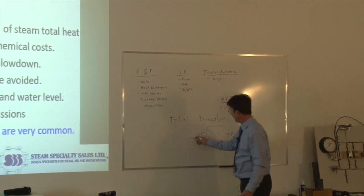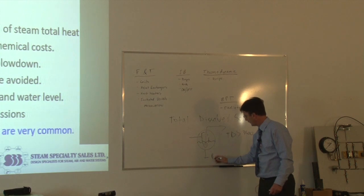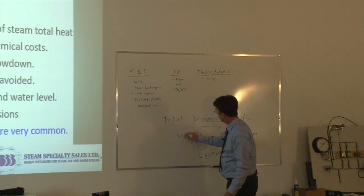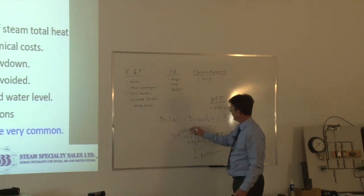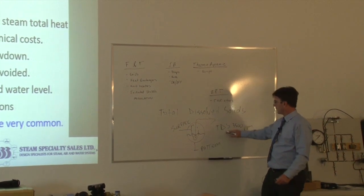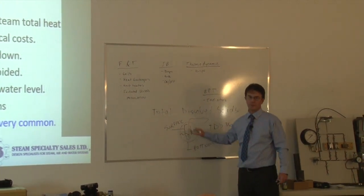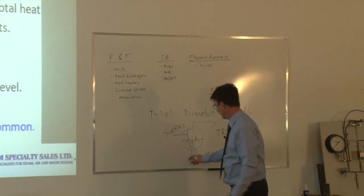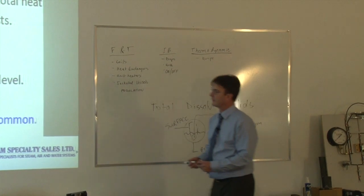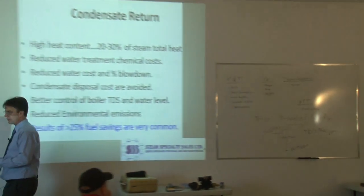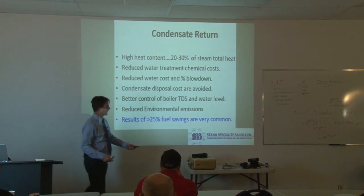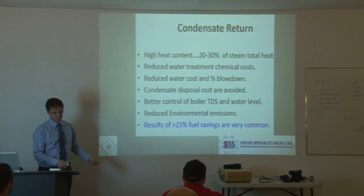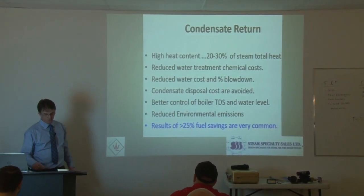There are two types of blowdown: surface blowdown and bottom blowdown. Surface blowdown, also known as continuous blowdown, controls the amount of total dissolved solids in suspension inside the boiler's water. Bottom blowdown is done a couple of times a day and gets rid of accumulated debris that can build up in the mud drum at the bottom of the boiler.